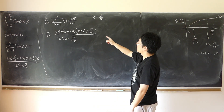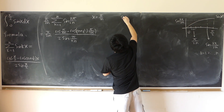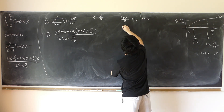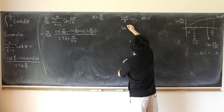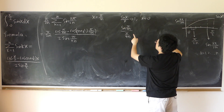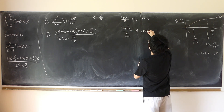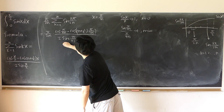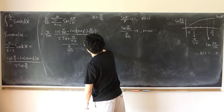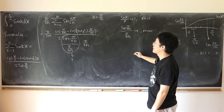Now I calculate the limit of this as n approaches infinity. Using the well-known limit that sine(x)/x approaches 1 as x approaches 0, we see that sine(π/4n) over π/(4n) also approaches 1 as n approaches infinity. So I divide and multiply by π/(4n) — which becomes 4n/π when flipped to the numerator since it was in the denominator — and this factor approaches 1.